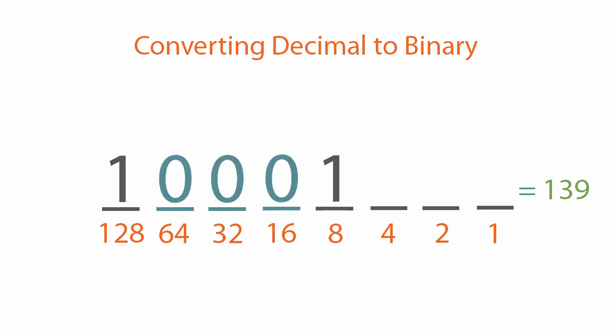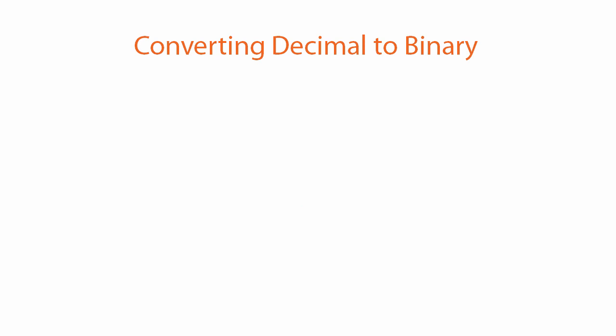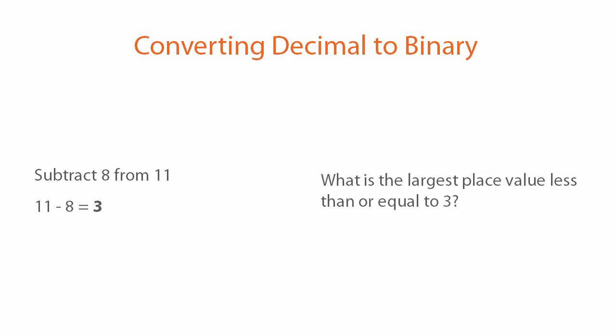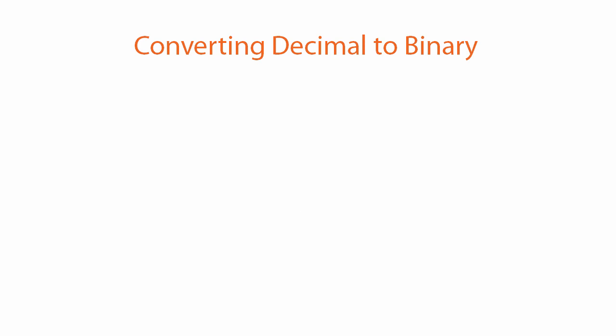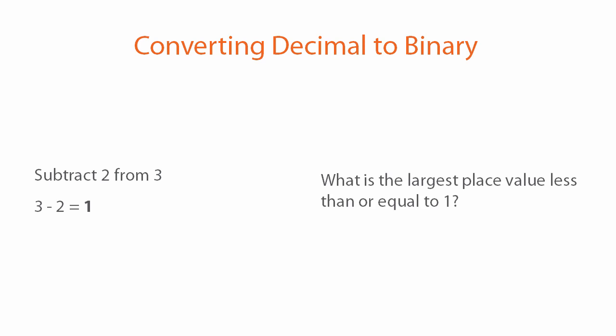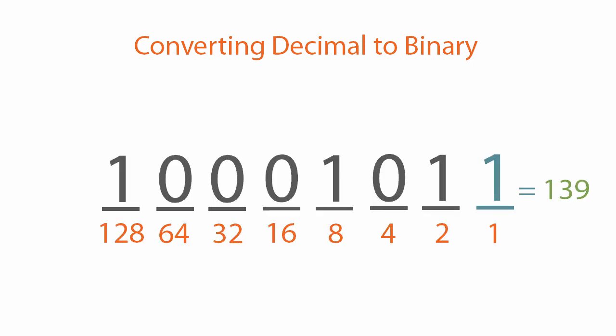The empty places to the left are set to 0 — if we set any of those to 1, the binary number would end up being more than decimal 139. We've placed a 1 in the 8's place, so we subtract 8 from 11, giving us 3. The largest place value less than or equal to 3 is the 2's place, so we put a 1 there. Then we subtract 2 from 3 to get 1, and the largest place value less than or equal to 1 is the 1's place — so we put a 1 bit there.